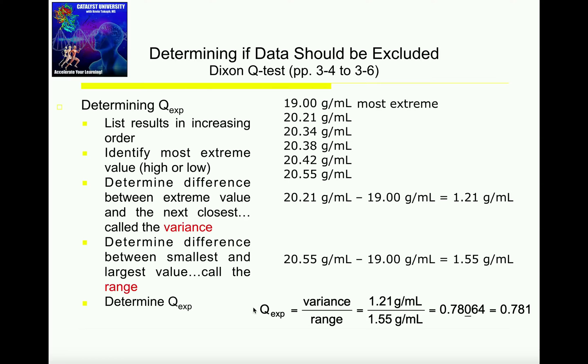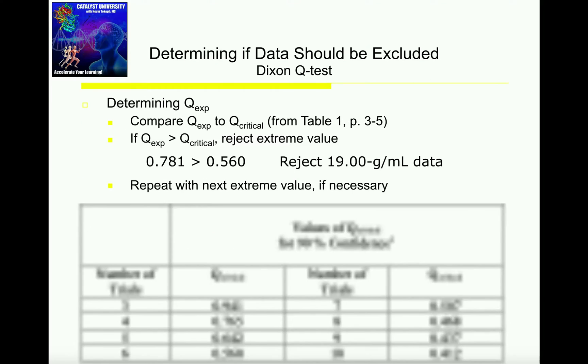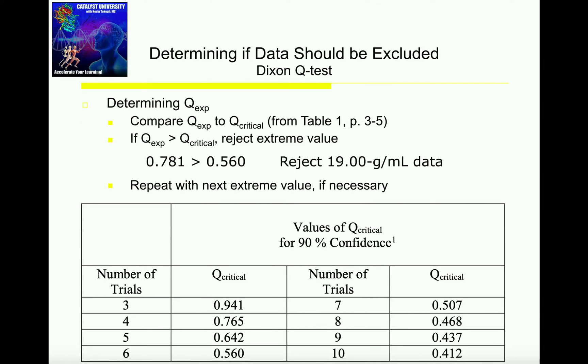Now I need to look up what's called Q critical, but I have to remember how many data points I have: 1, 2, 3, 4, 5, 6 data points. These tables would be either in your textbook or your lab manual, or you can probably just look them up online. I find the number of data points, which was 6, and my Q critical is 0.560.